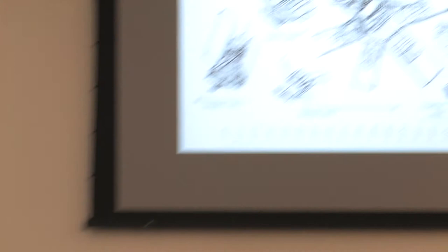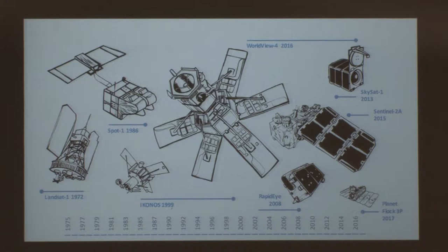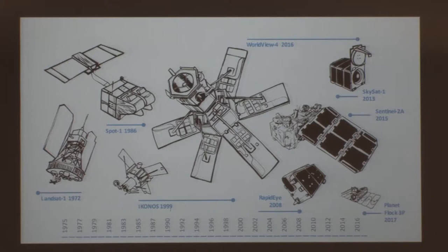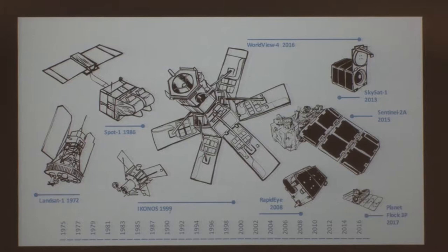Since its launch, an enormous amount of hardware has gone into orbit. Ikonos, launched in 1999, was really the first commercial remote sensing satellite to get down to one meter per pixel. That allowed us to see an enormous level of detail on the Earth, at least in the commercial space, that we hadn't seen before.